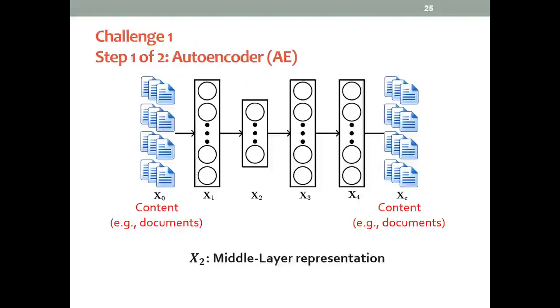We will start with a simple autoencoder. Usually this autoencoder is just some multi-layer perceptron where we have the content feed into the model, and it will go through several layers of linear non-linear transformation to recover the content itself. Usually we use the output of the middle layer as the representation for the content.